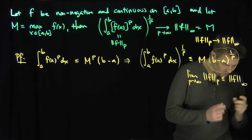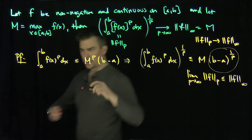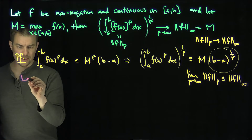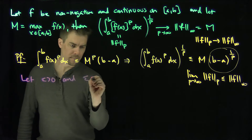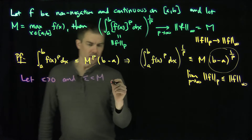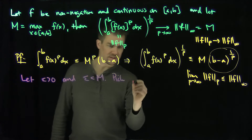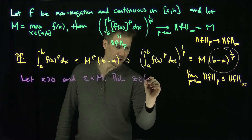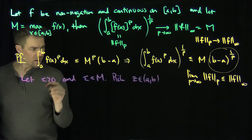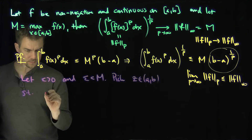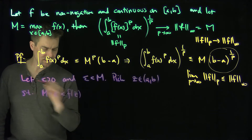Now the second part: we have to squeeze a small area where the function is close to this maximum. So let epsilon be greater than 0 and less than M, and then pick a point z in the open interval (a, b) — if z is at a or b, it's a simpler problem — such that M minus epsilon is less than f(z).